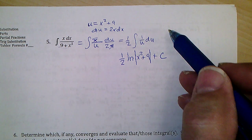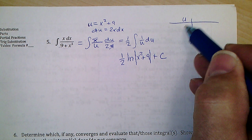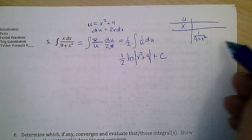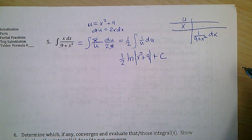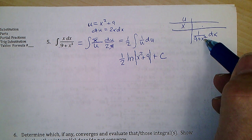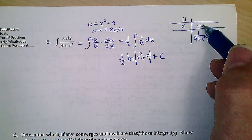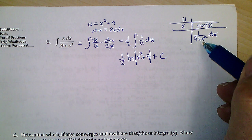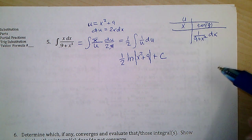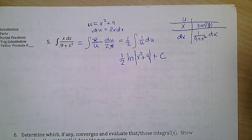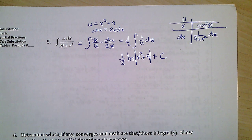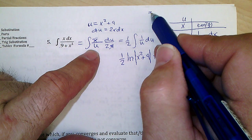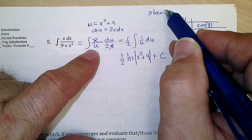Some of you tried to do this one by parts. If I let u = x and dv = 1/(9+x²) dx, to integrate dv I need to know the integral of 1/(9+x²). That requires trig substitution: let x = 3 tan θ, dx = 3 sec²θ dθ, and 9+x² = 9 sec²θ. Working through gives v = (1/3) tan⁻¹(x/3).